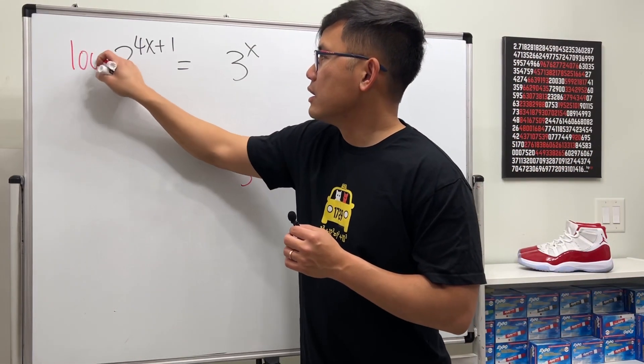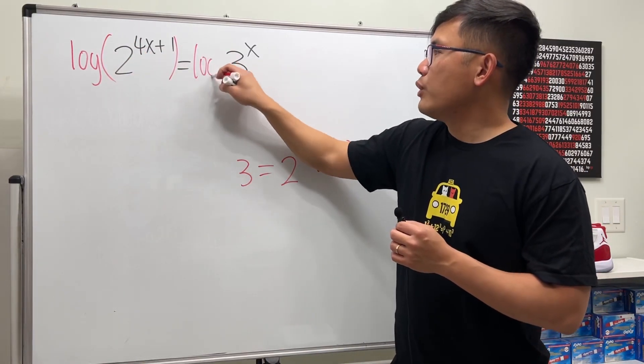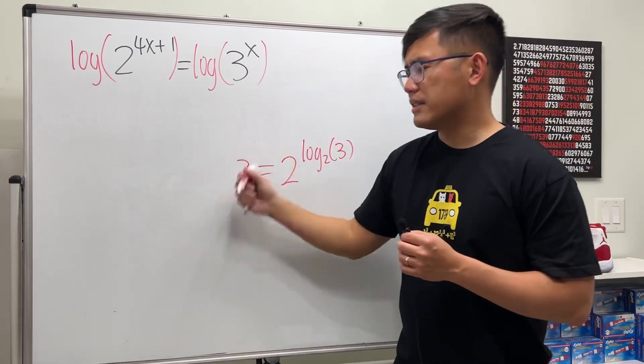So let's go ahead and take log base 10, because this is the one that we have on the calculator. And if you want to use ln, the natural log, that's also okay.